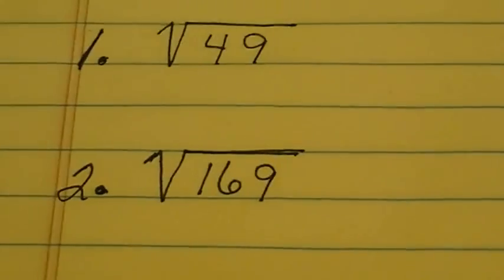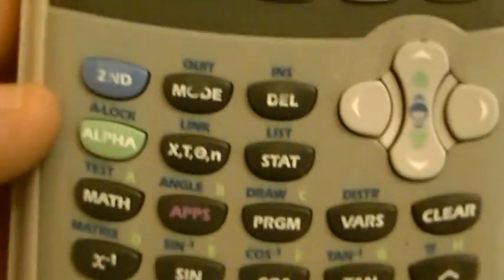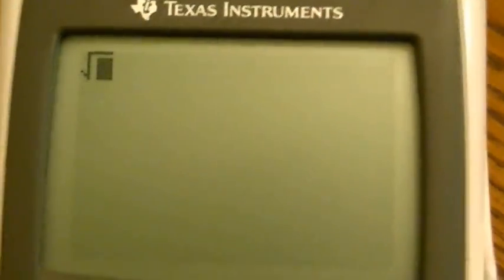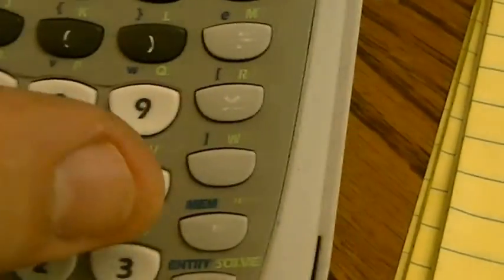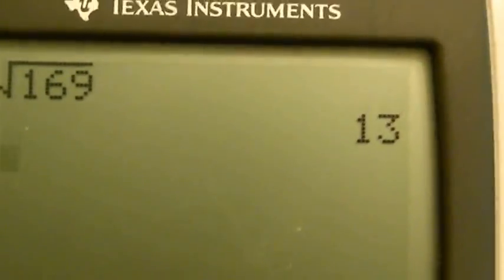The next problem is the square root of 169, so I'm going to clear that screen. Square root again — I'm going to hit the second button and then X², that gets my radical on the screen. Then I punch in 169 and hit enter, and the square root of 169 is 13.